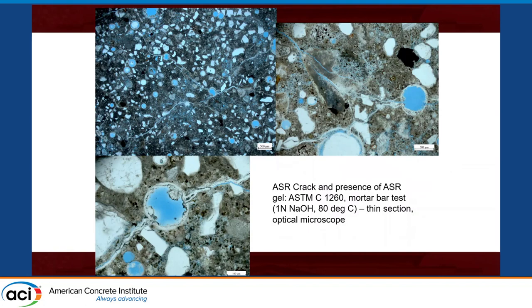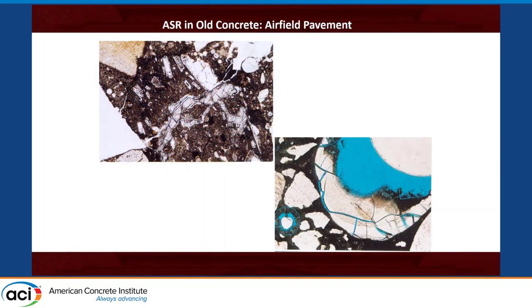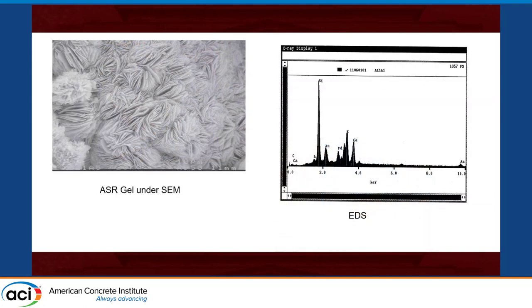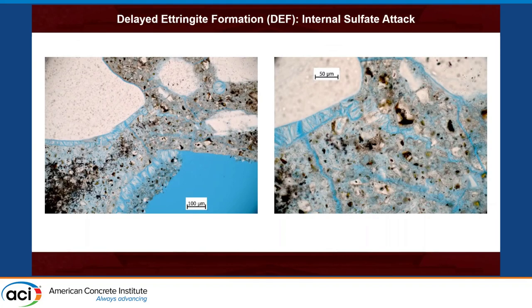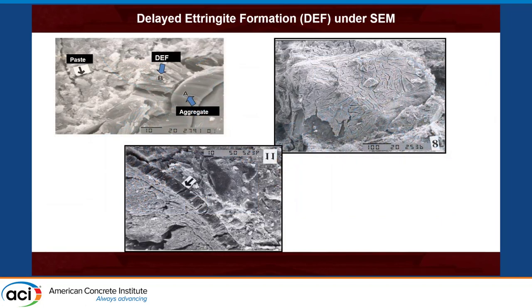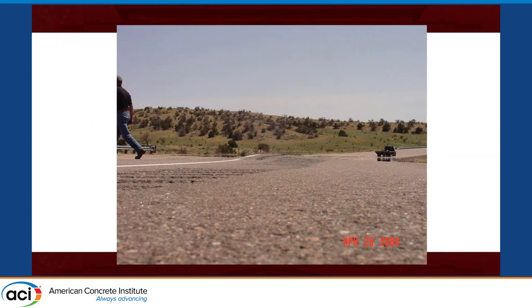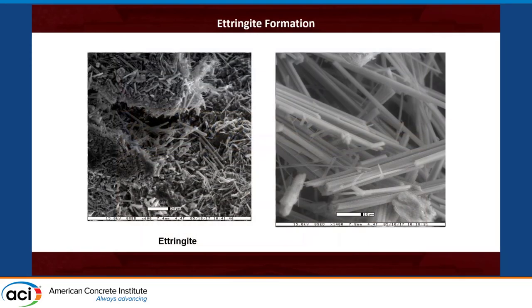We can see ASR gel in optical microscopy, but if I need to know the composition of ASR gel — whether this is ASR gel or related to delayed ettringite formation — I need SEM. The SEM gives clear identification of ASR gel. Similarly, using SEM with X-ray analysis, you can confirm delayed ettringite formation and heating-related ettringite gases. These are all examples of the capability of the combined effect of photographic techniques and scanning electron microscopy. This is beautiful and powerful, but an expert is needed to interpret the results in the best way.